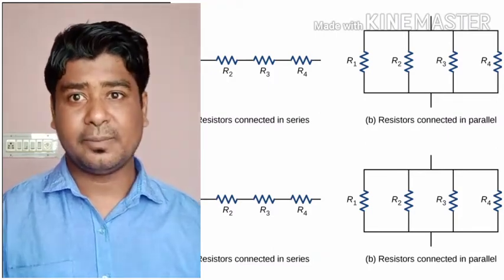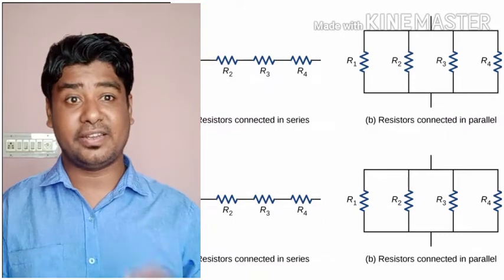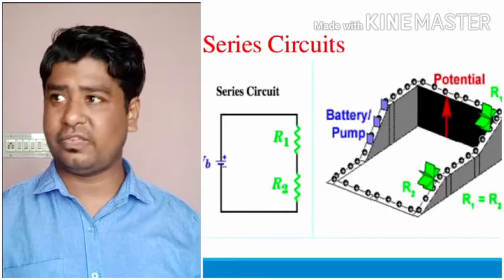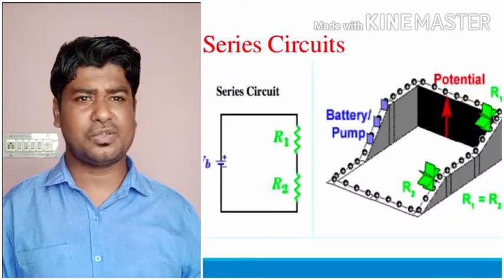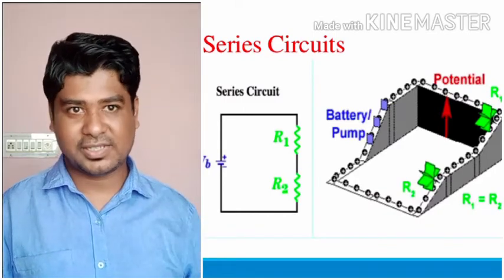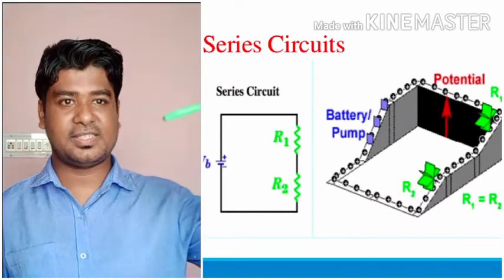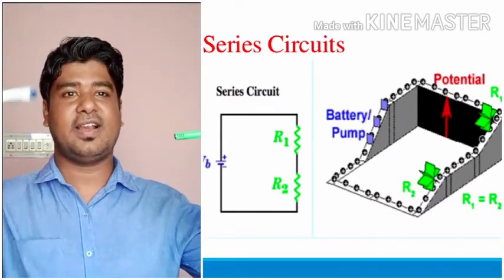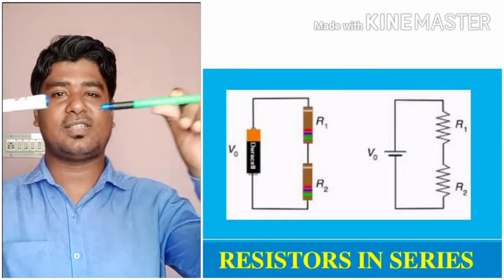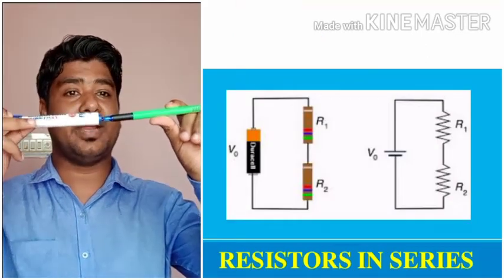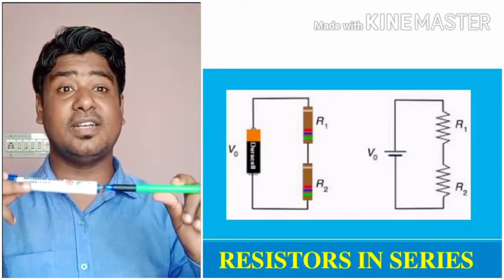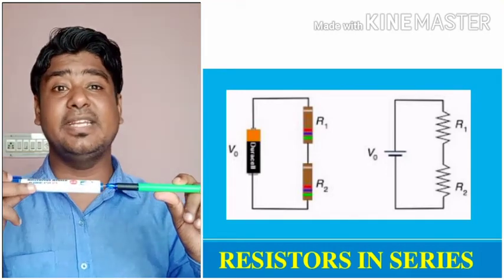First, let us look at what happens when the resistors are connected in series. What is series and how is it connected? Suppose this is one resistor and this is another resistor, and these two resistors are connected end to end — then it is said to be in series.